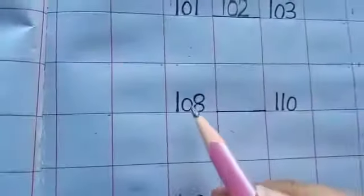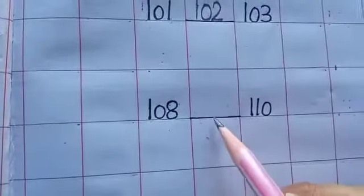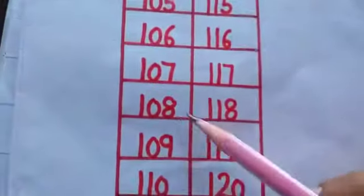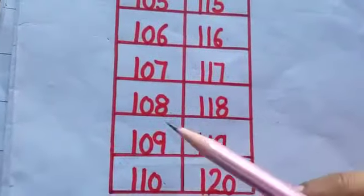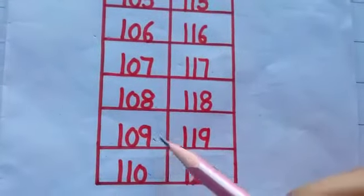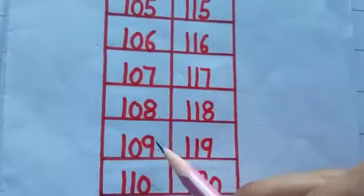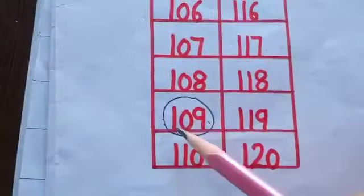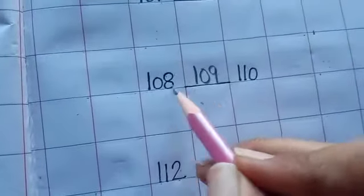Next. 108. Aap dekho, beech mein koi number nahi diya gaya aapko. And then 110. Aap dekho, yeh hai. Look at here. 108 and 110. Aap 108 or 110 ke beech mein middle number. Jo number beech mein aata, wo kya hai? 109. Tau, wo yahan pe kya likhoge? 109. 108, 109, 110.